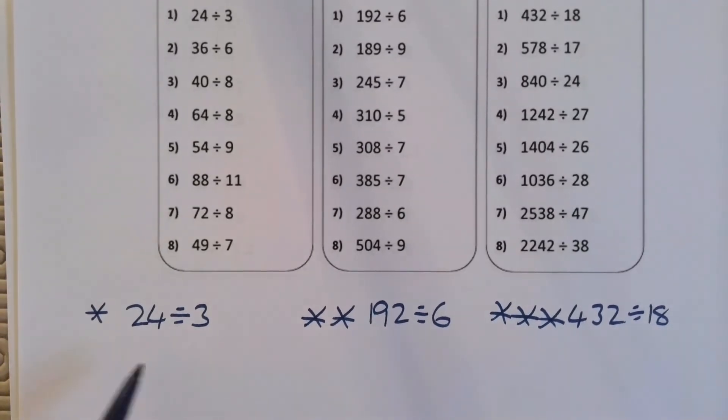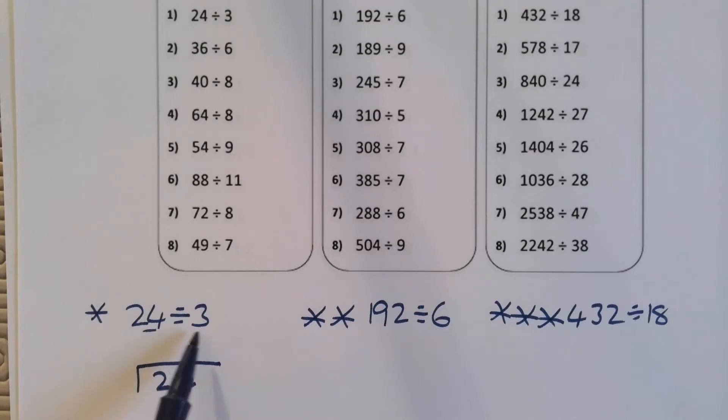So the method we're going to use is the bus stop method. The bus stop is called the bus stop because it kind of looks a bit like a bus shelter. The first number to the bus stop always gets a seat in the bus stop, so there we go, there's the first number to the bus stop, and the second number to the bus stop, so he's the second number in the calculation, he has to sit outside.